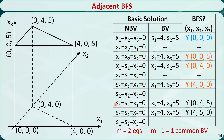It is easier to find adjacent basic feasible solutions to a point graphically — they are just its direct neighbors. That is how to find basic feasible solutions to a linear programming problem in the standard form. If a problem has more than three variables, we cannot represent it graphically, but all the introduced theorems are still true.